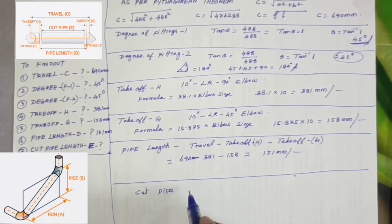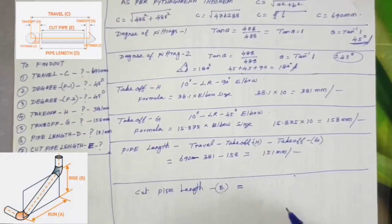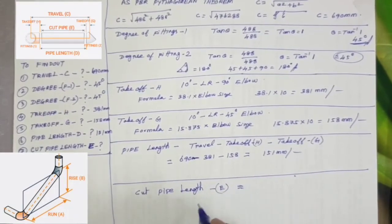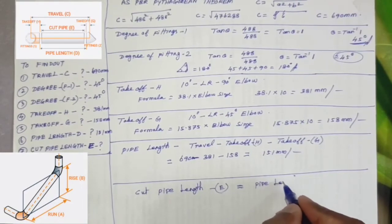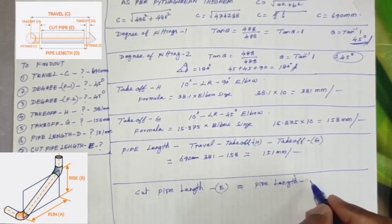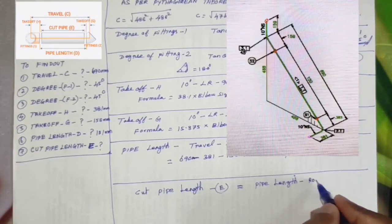Last one: cut pipe length E formula is pipe length minus 2 root size.